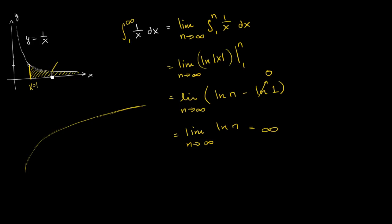So here we do not have a finite area. This is an infinite area. It's interesting. When this function decreased faster, when it was 1 over x squared, we had a finite area. Now we have an infinite area. And so we would say that this improper integral is divergent.